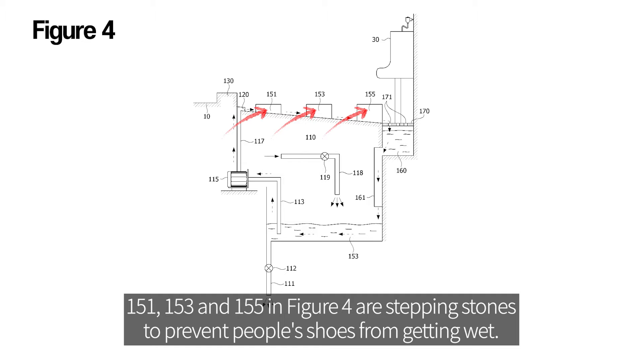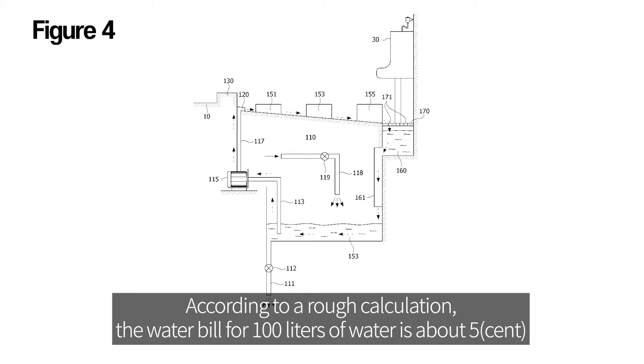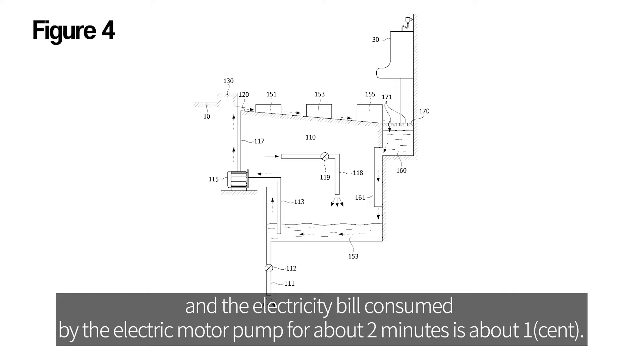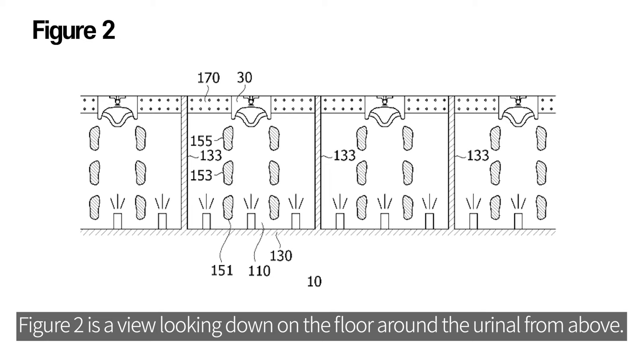151, 153, and 155 in Figure 4 are stepping stones to prevent people's shoes from getting wet. According to a rough calculation, the water bill for 100 liters of water is about 5 cents, and the electricity bill consumed by the electric motor pump for about two minutes is about 1 cent.